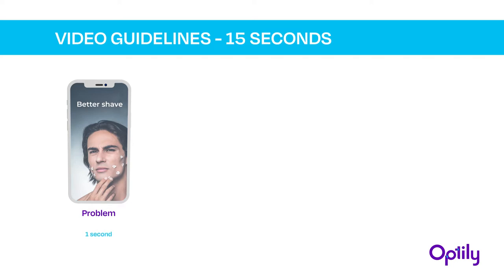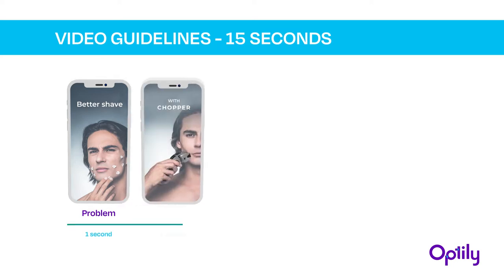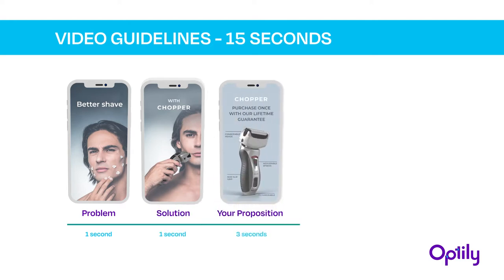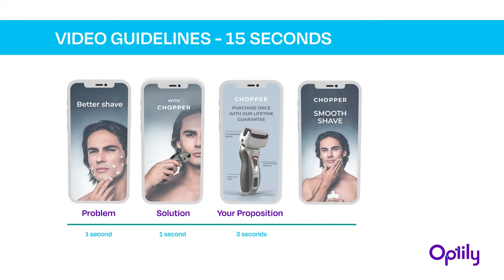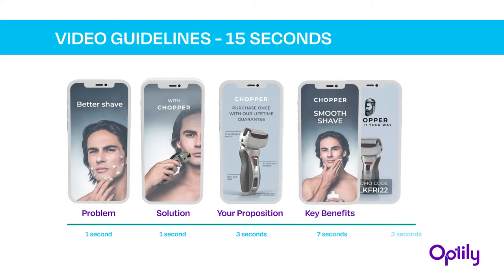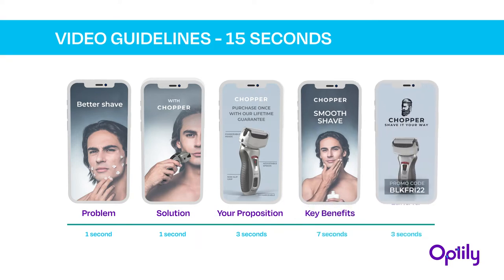Here is how we suggest you structure your ad: begin with highlighting the problem you solve in the first second to grab attention, and bring your brand in as the solution in the second second. Give around three seconds to your product intro, then list your key benefits for seven seconds, and finish with a strong call to action.